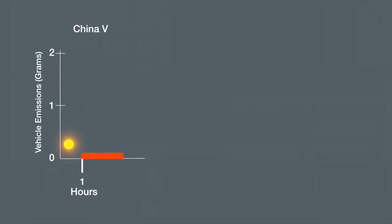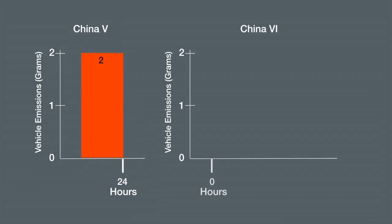Current China 5 regulations allow for 2 grams of diurnal evaporative emissions per vehicle in a 24-hour period. China 6 will require automakers to reduce that number significantly, less than 700 milligrams per day in two consecutive 24-hour periods, including hot soak emissions and a deterioration factor.